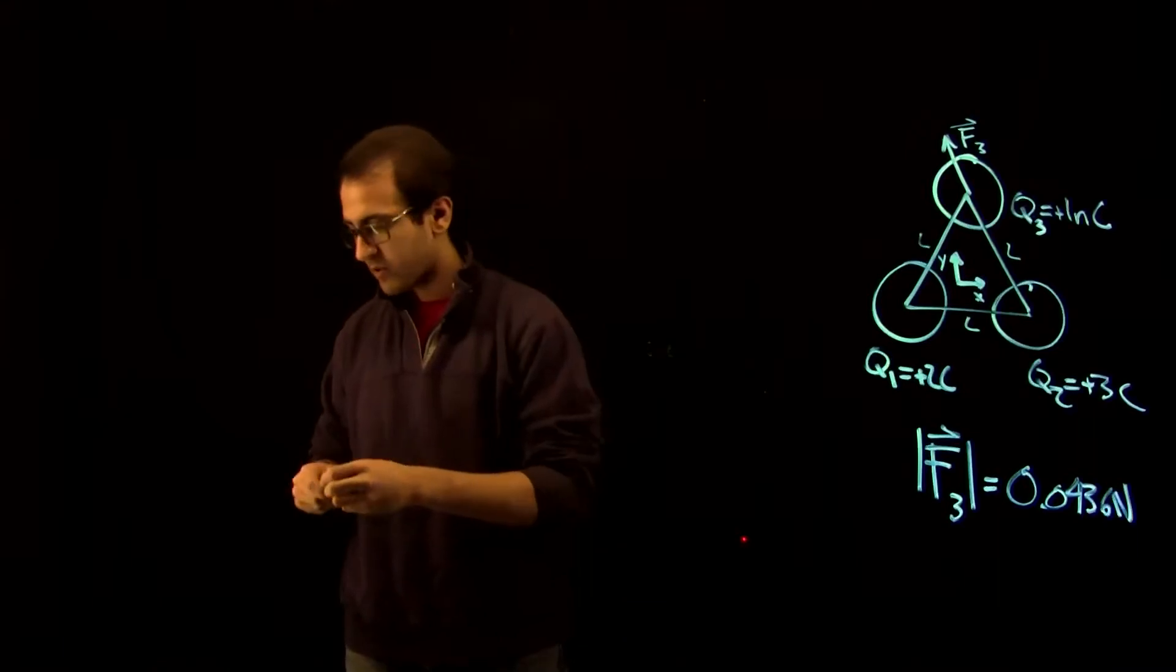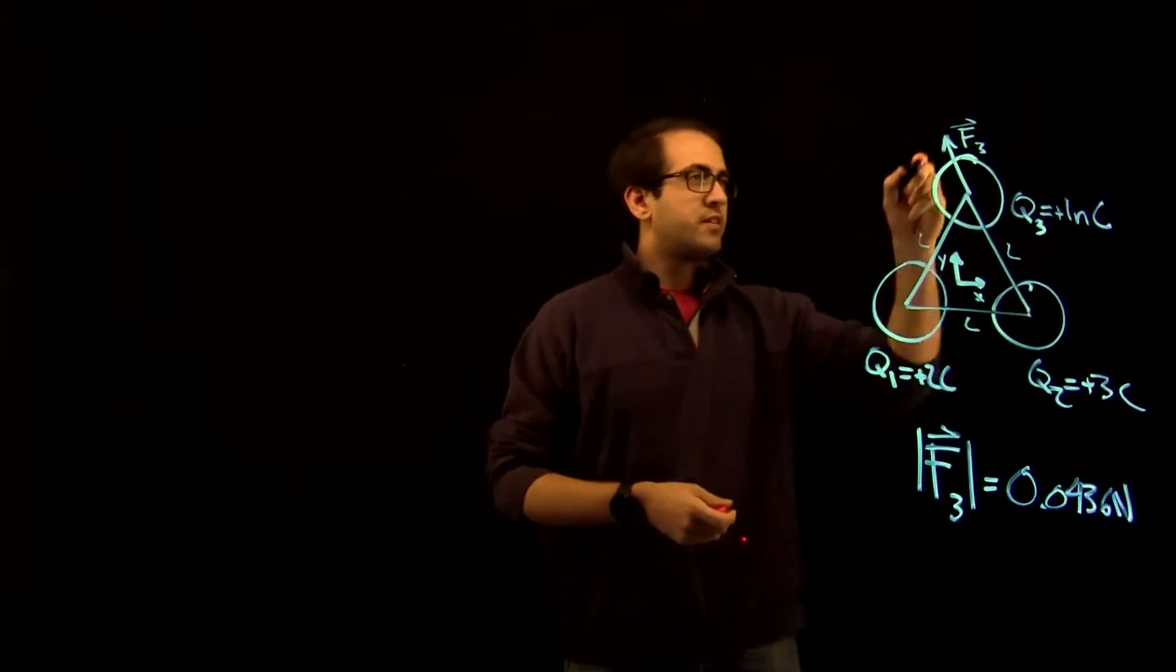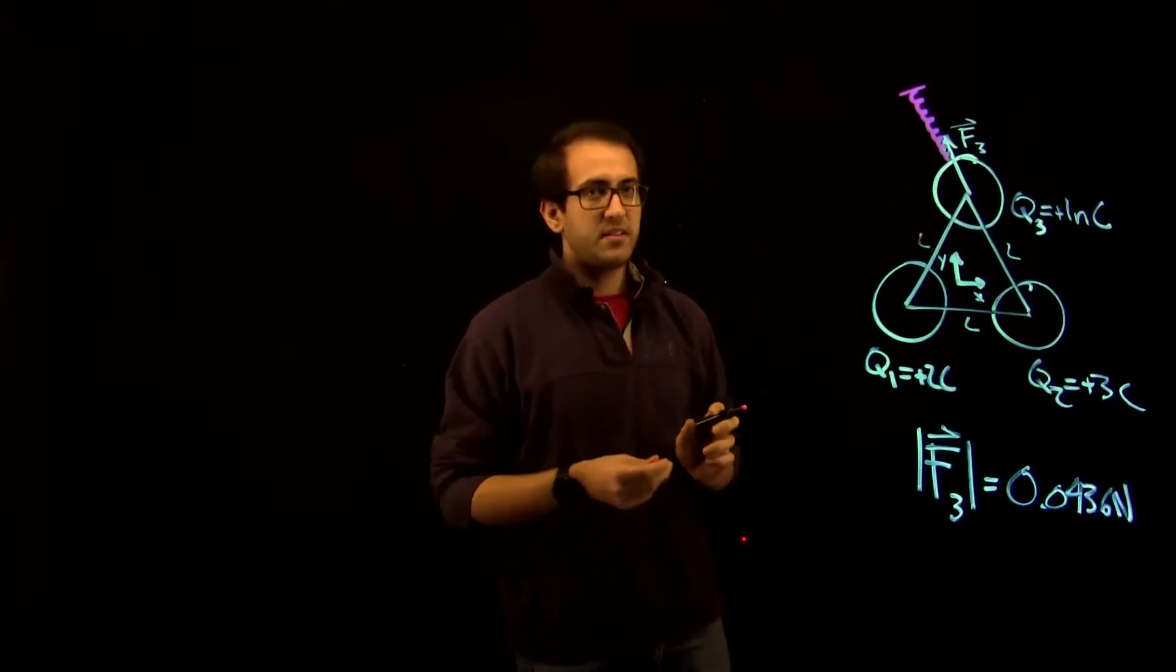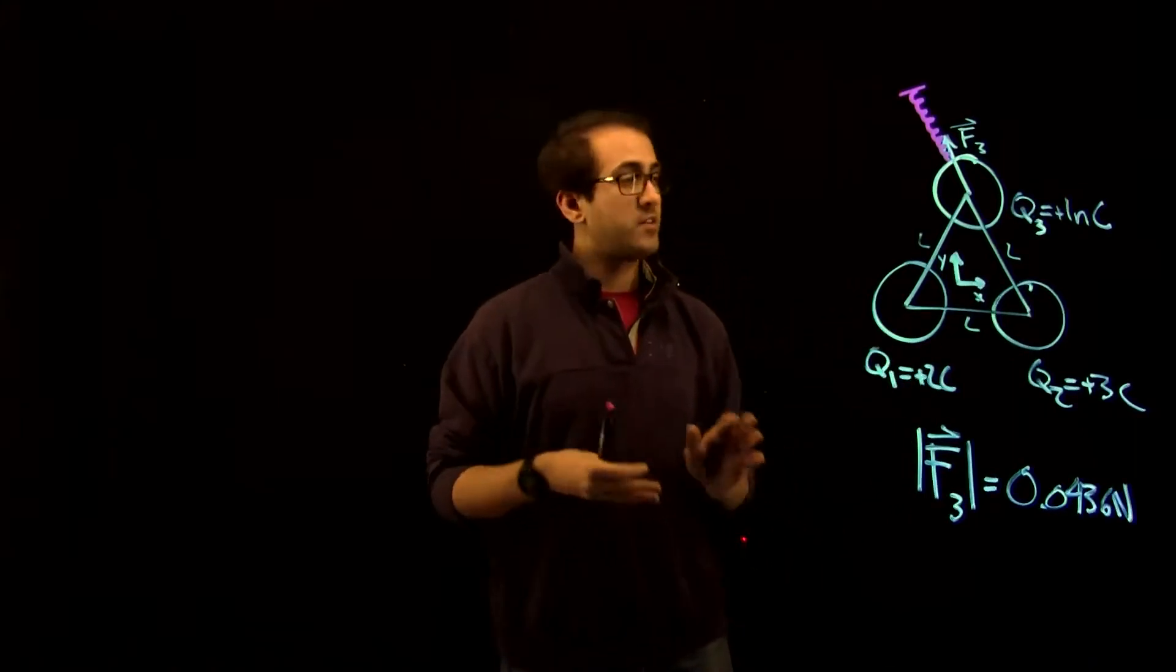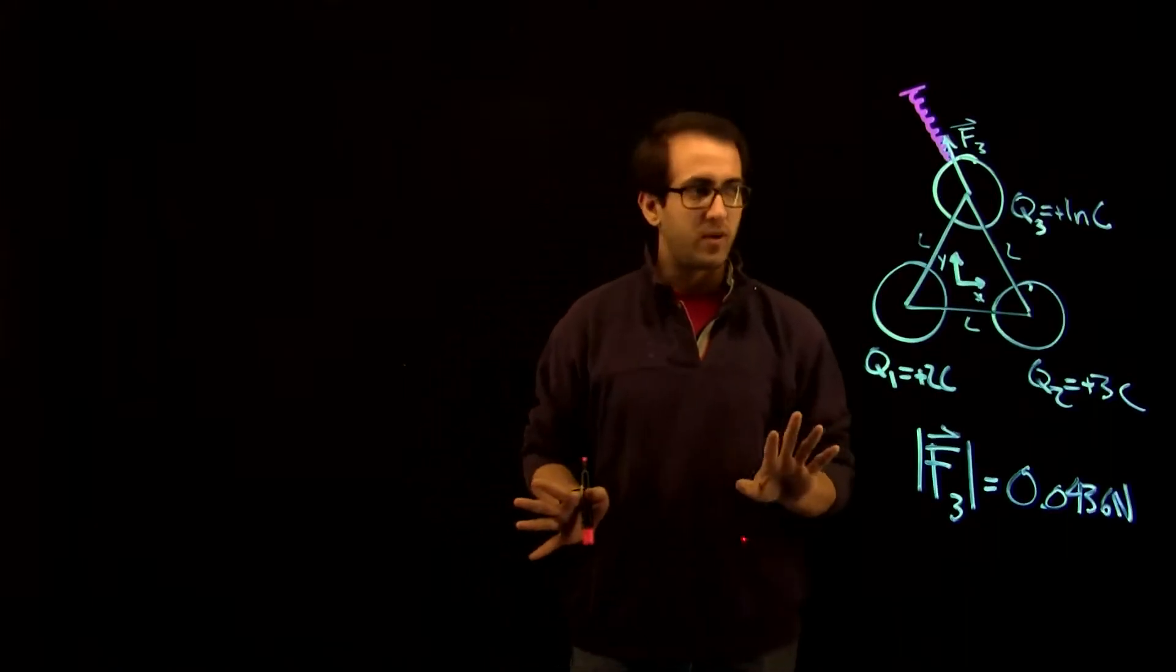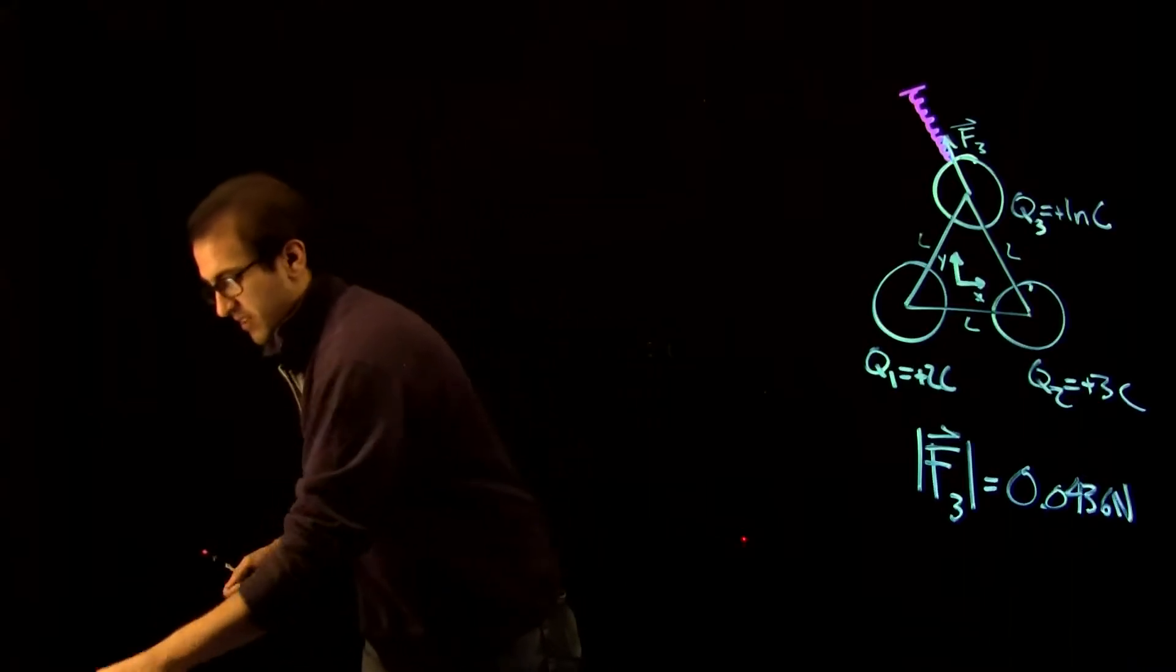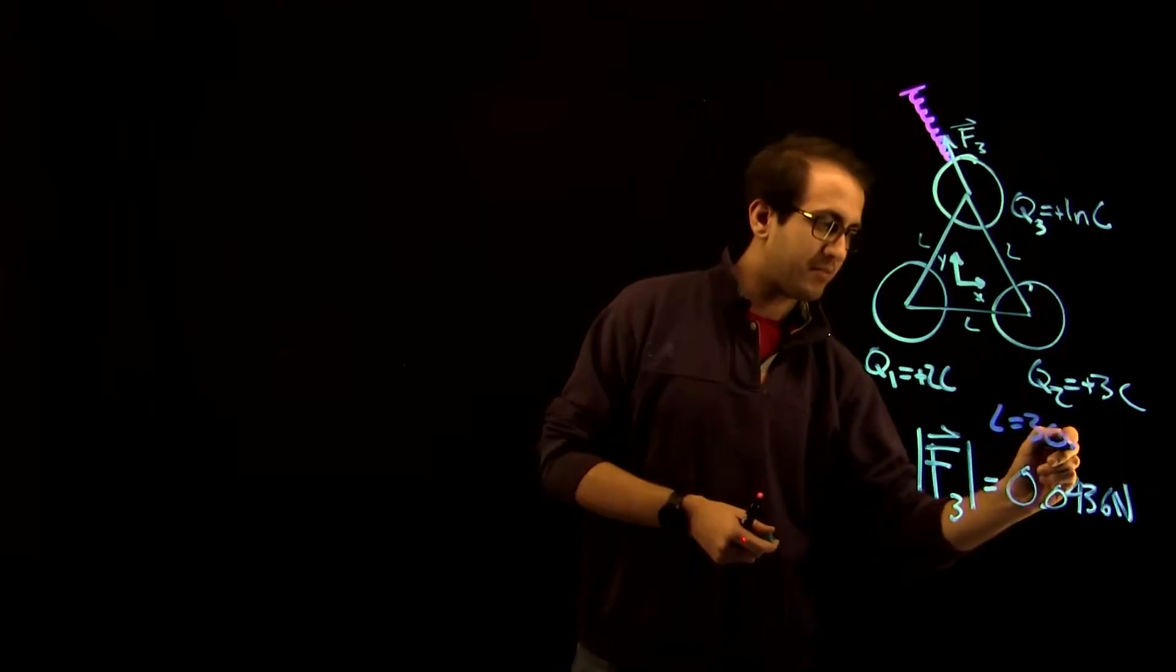We're going to add a spring that connects and directly opposes F3. Now, typically in these problems, we assume that the three charges are fixed, meaning that they're not allowed to move. That's why this is called electrostatics. Now we're going to get a little bit into an electrodynamics question, so bear with me. But we're going to only allow this spring to contract by one millimeter. The side length, L, that we choose here, is that L equal to 30 meters.